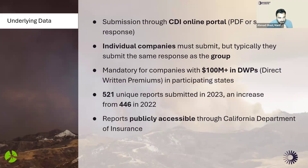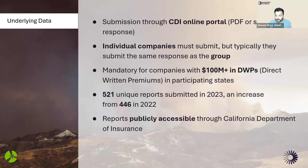Let's dive into the specifics of the underlying data. Number one: the submission process. All data submissions were made through the California Department of Insurance online portal. Companies could choose to upload their own climate risk disclosure as a PDF, or if they didn't have one, they could directly answer survey questions on that portal. It's important to note that submission wasn't for everyone — any insurance company with direct written premium exceeding $100 million in a participating state was required to submit. The good news is that represents over 80% of insurers.